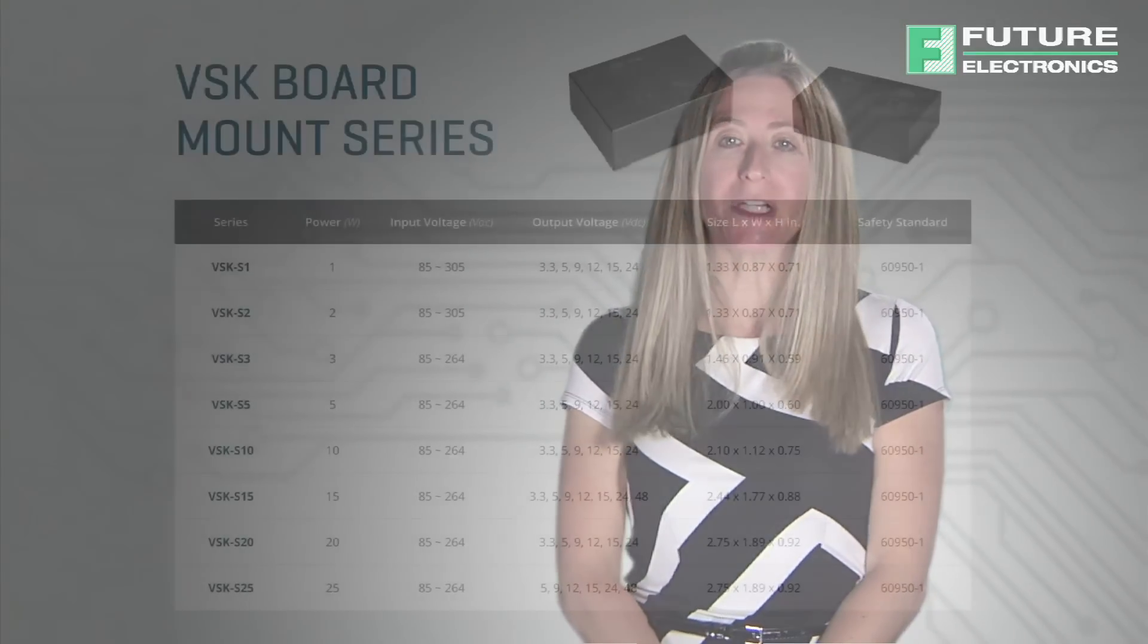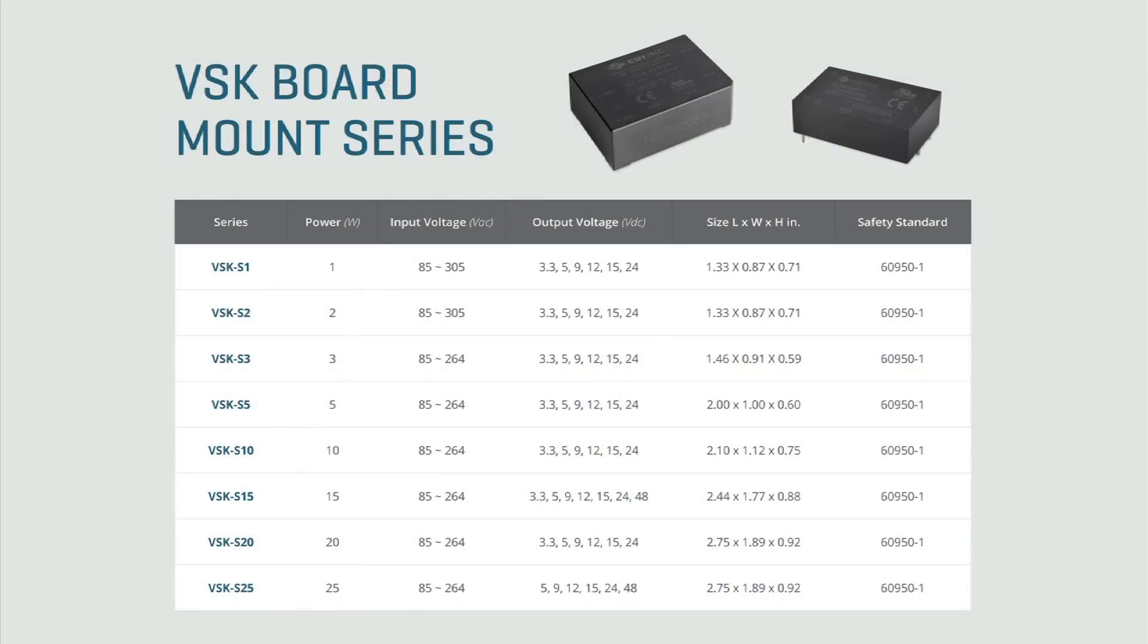The VSK board mount family is available in 10 separate series ranging from 1W up to 25W. All models feature universal input and a range of available output voltages from 3.3VDC to 48VDC depending on the series.